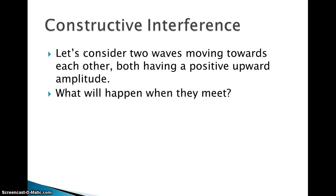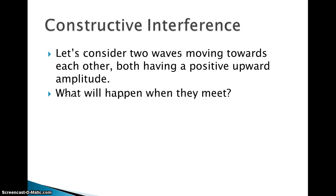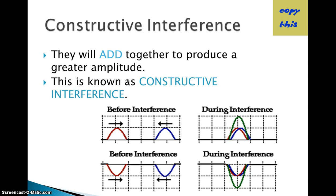The first type is constructive interference. When two waves meet while traveling along the same medium it's called interference. Constructive interference is when two waves moving toward each other both have positive, upward amplitude. The two waves add together to become one wave and produce greater amplitude.